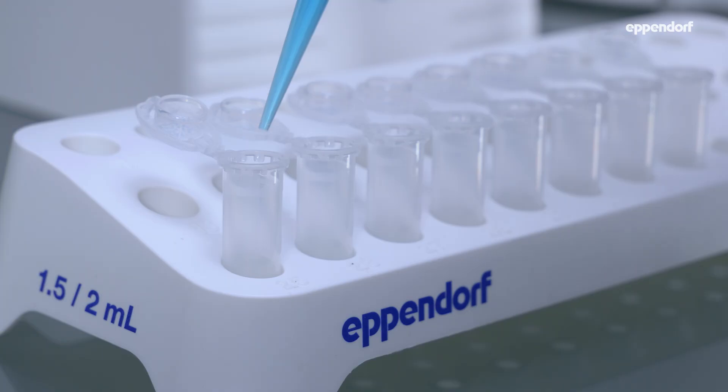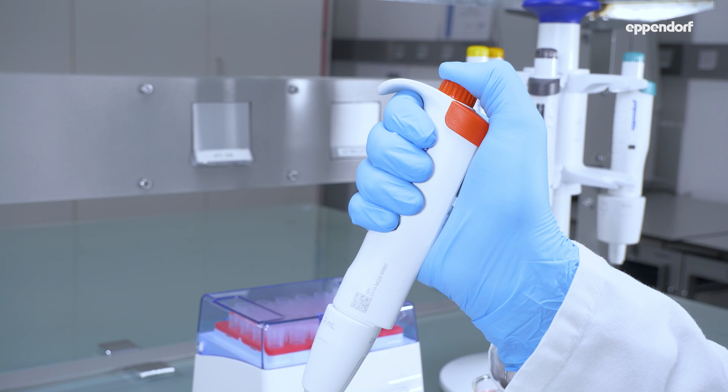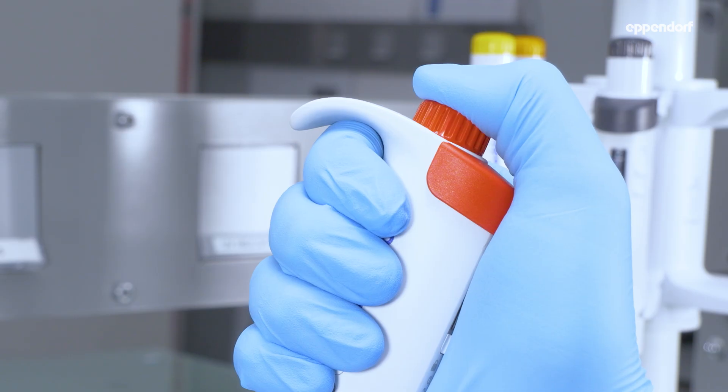Touch the inner wall of your target vessel with the tip at an angle between 20 and 45 degrees. After you've pushed the control button down to the first stop, blow out the tip by pushing further down to the second stop.